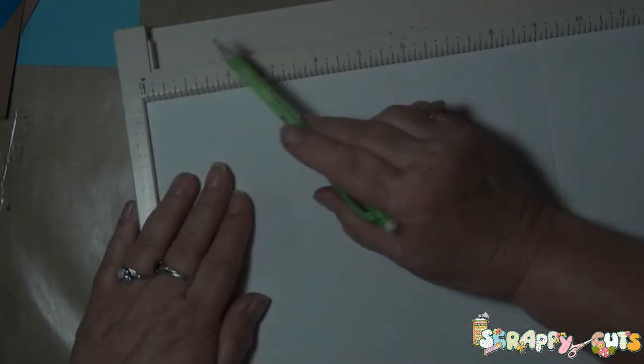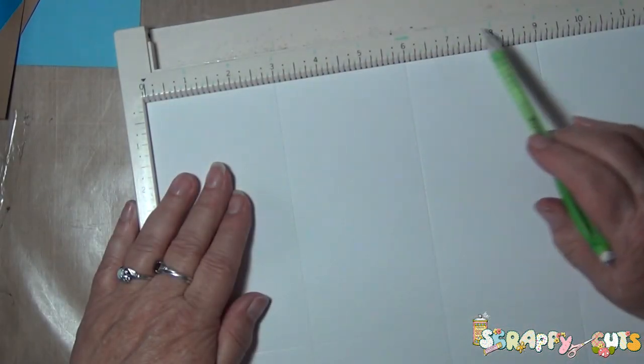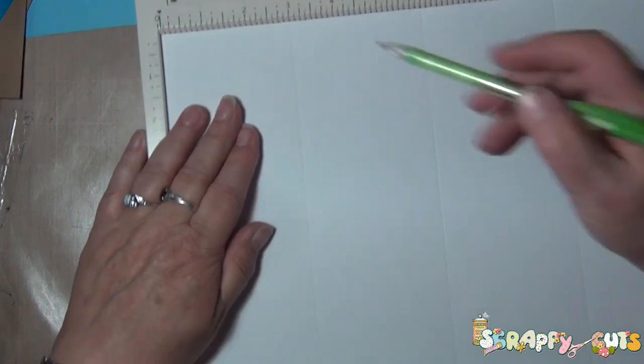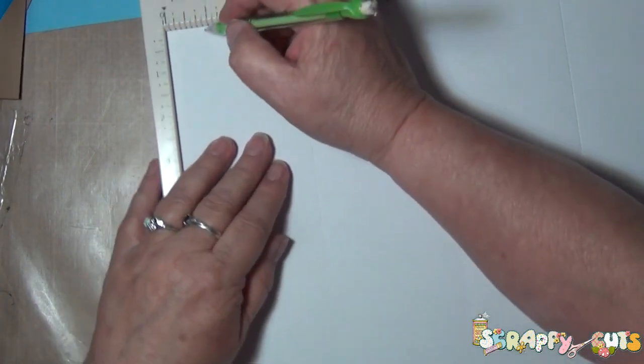The first thing you're going to do is take a 12 by 12 inch piece of paper and score it at 3, 6, and 9 inches, and then turn it at a 90 degree angle and score it again at 3, 6, and 9 inches.